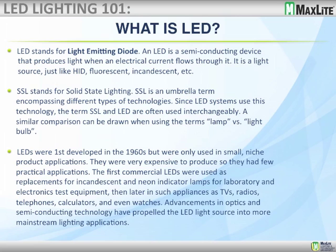What is an LED? An LED is a light-emitting diode — a semiconducting device that produces light when electric current flows through it. It's a light source like HID, fluorescent, incandescent, and others. Also known as SSL, which stands for solid-state lighting. SSL is an umbrella term for all different types of solid-state lighting technologies. Since LED uses this technology, the terms SSL and LED are often interchangeable.